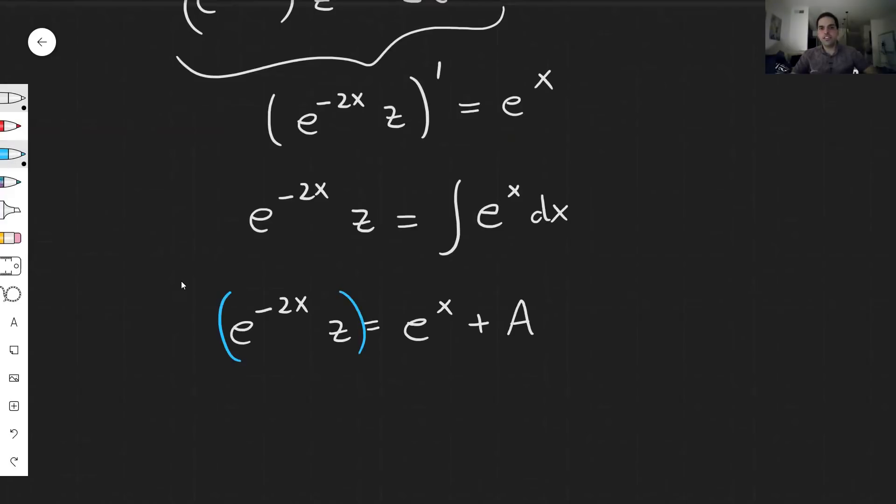And last but not least for this step, to get rid of this e^(-2x), multiply by e^(2x) on both sides. Then you end up getting z = e^x · e^(2x) = e^(3x) + Ae^(2x). Alright, wonderful. So this gives us z.